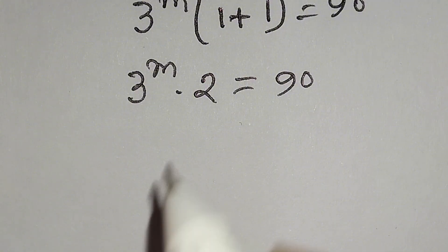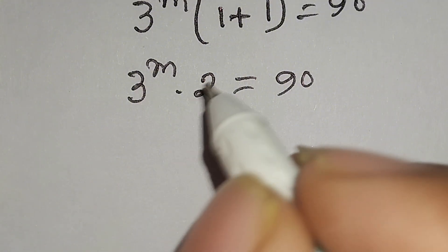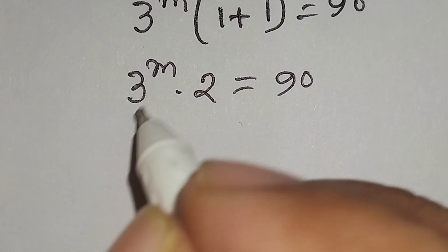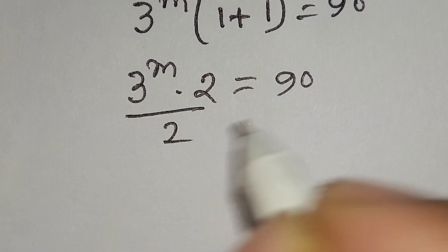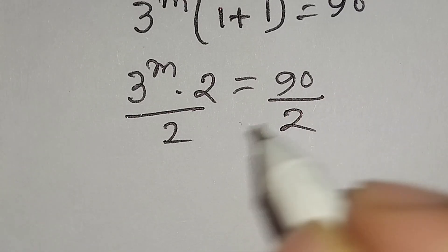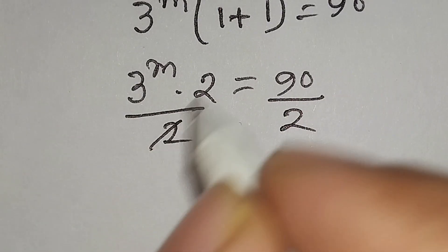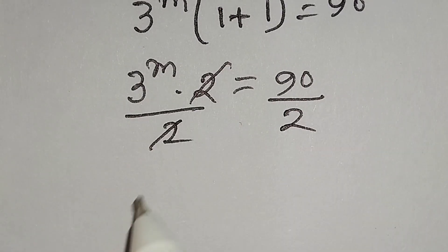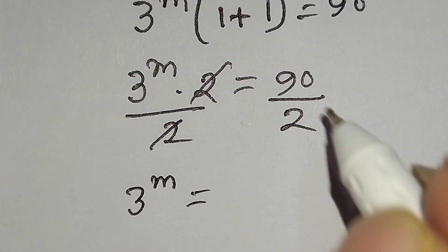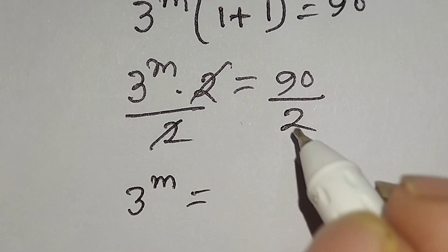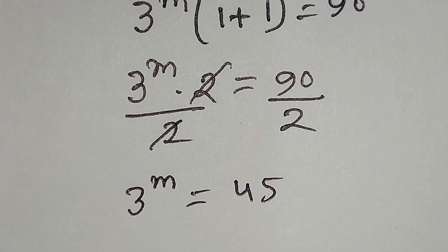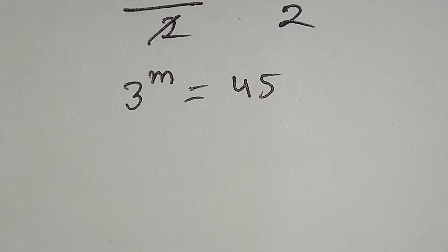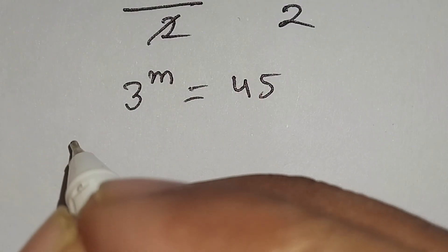Here 3 to the power m times 2 is equal to 90. Now we will divide both sides by 2 to eliminate this 2. So 3 to the power m times 2 over 2 equals 90 over 2. The 2's cancel out, so 3 to the power m is equal to 45.